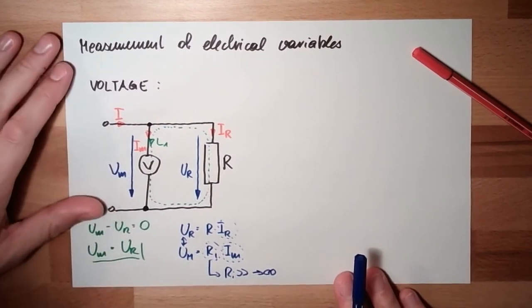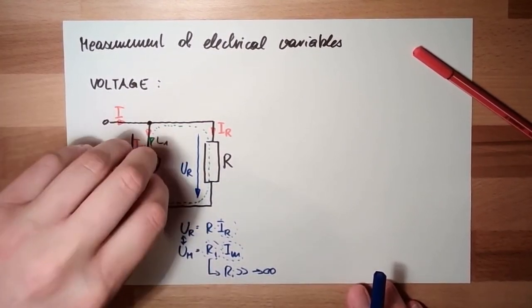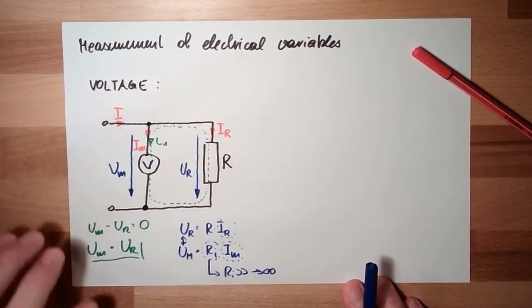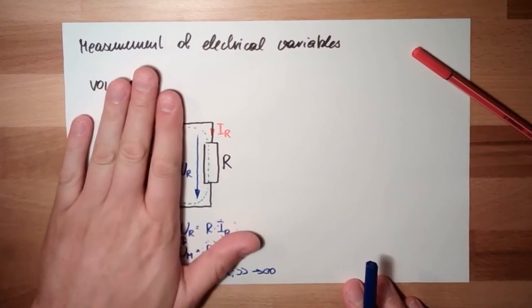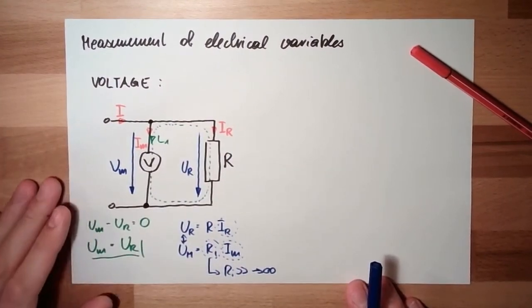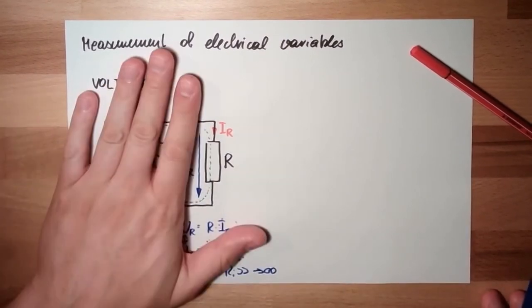So a voltage measurement device needs to be with high resistance, high internal resistance. Then it's working proper. Then I make less errors. Voltage measurement, always parallel. Always parallel. And with high internal resistance. This is one thing we measure.